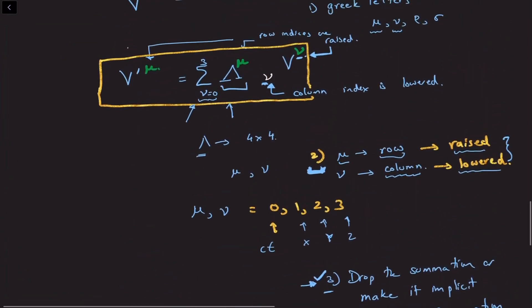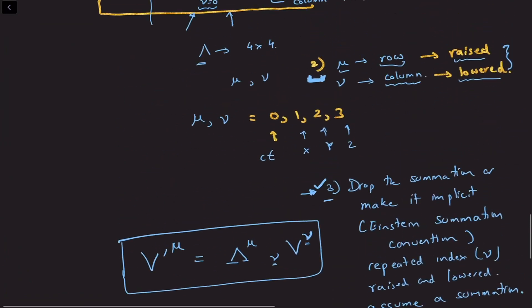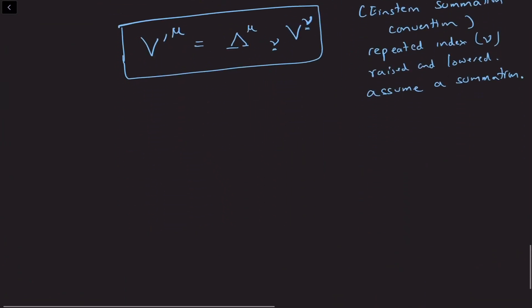What we've done so far is correct: vector indices will be raised, and the transformation matrices will have mu and nu in this form. The resulting summation will also result in a vector which has a raised mu, which is again a four-vector index. So let's see where the conflict arises between law two and law three.